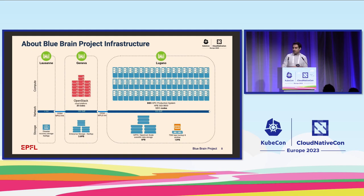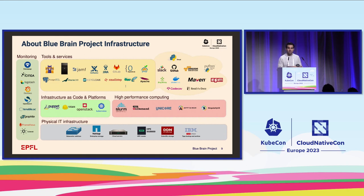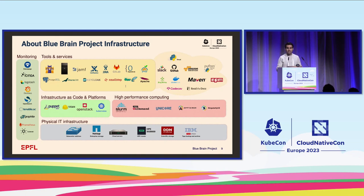Also in Geneva we have a little under four petabytes of enterprise storage based on NetApp. This is the catalog of services we offer to our users in the organization: things like OpenStack, Puppet (our configuration management tool), GitLab, Jira, Confluence, several different database technologies, authentication via Keycloak, and a full monitoring stack. All of this is virtualized and all on-premises.